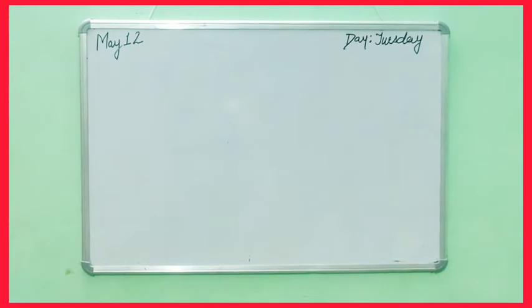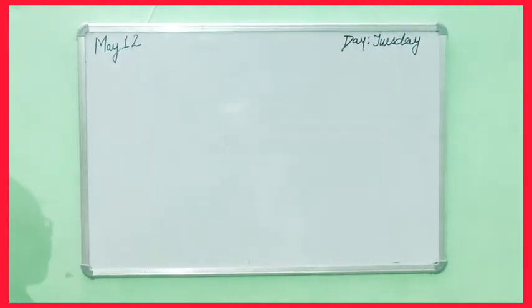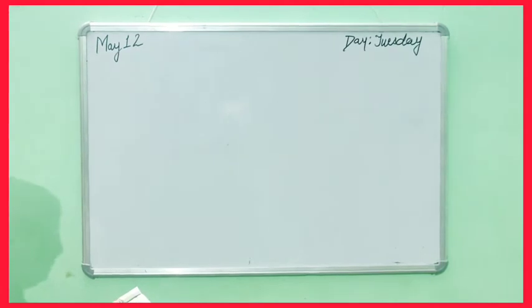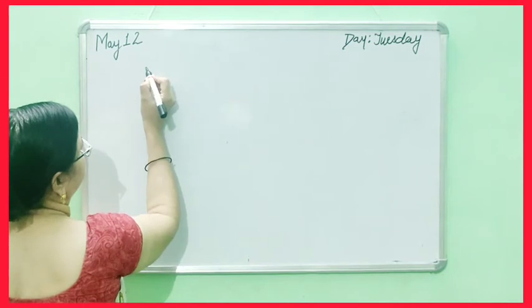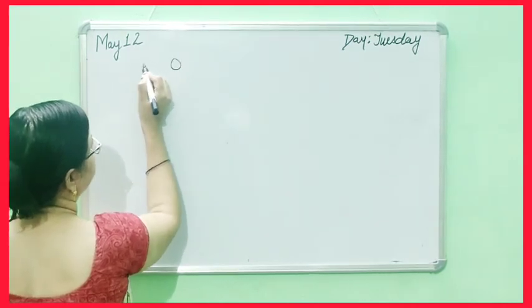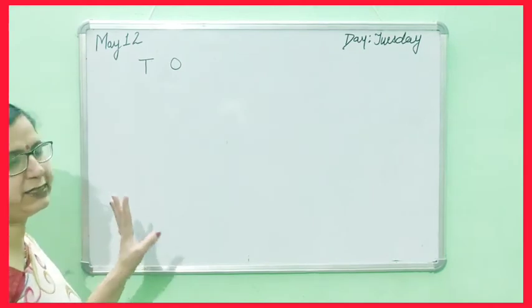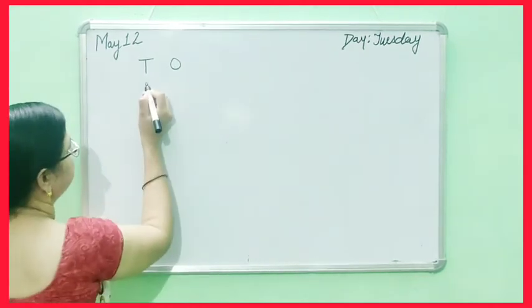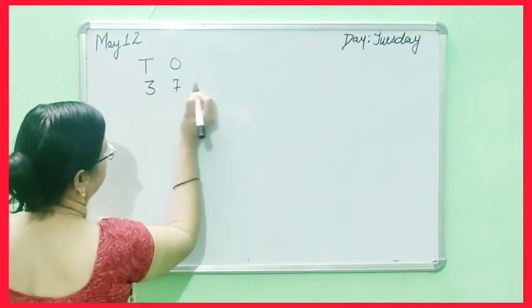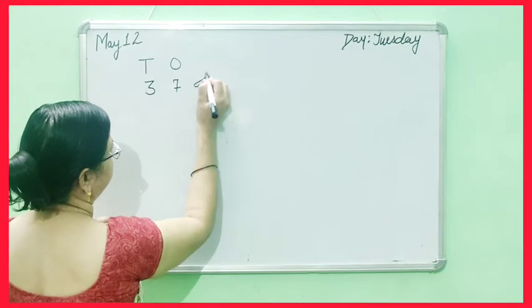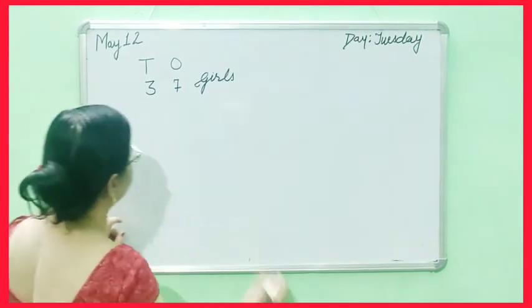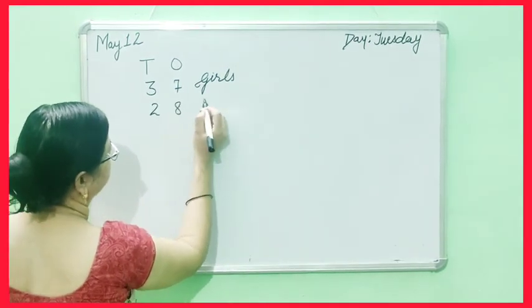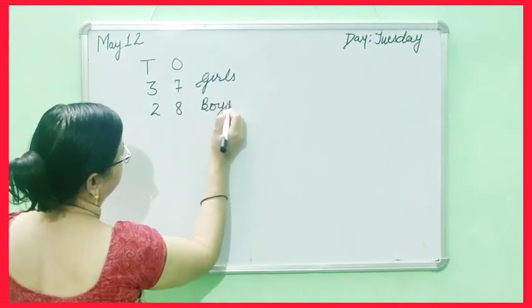In a class there are 37 girls and 28 boys. How many students are there in total? 37 girls. How many girls? 37. Ones and tens, we have 2 digits. We will write 37 girls and 28 boys.